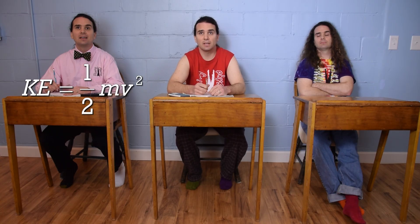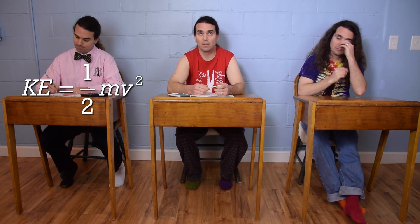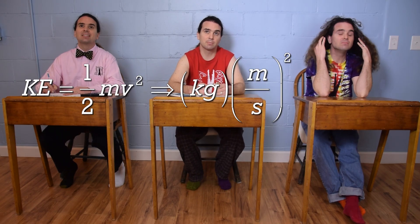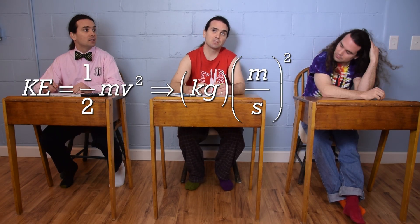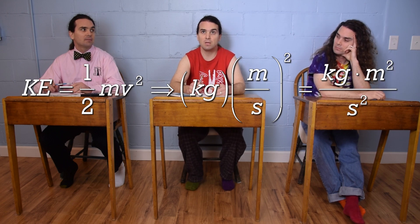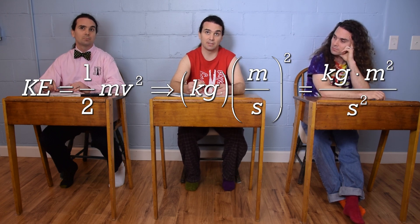Oh? Okay. Kinetic energy equals one-half mass times velocity squared. So, its dimensions are mass in kilograms, and velocity is in meters per second, and velocity is squared, so it's kilograms times meters squared over seconds squared.